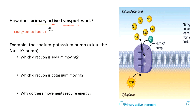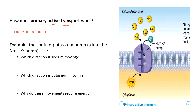Remember, anytime you see active transport, active means energy is required. When I'm doing primary active transport, what primary tells me is that the energy came from ATP. A good example of primary active transport using ATP as the energy source is something called the sodium-potassium pump.